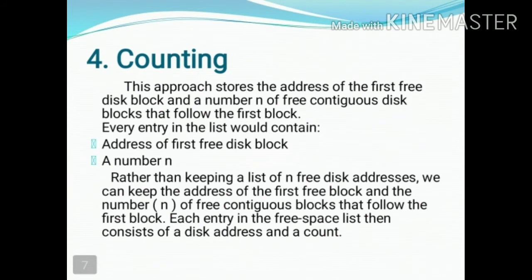The next method is counting. This approach stores the address of the first free disk block and a number n of free contiguous disk blocks that follow the first block. Every entry in the list contains the address of the first free disk block and a count. Rather than keeping a list of n free disk addresses, we keep the address of the first free block and the number of free contiguous blocks that follow.